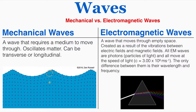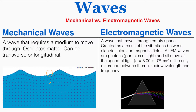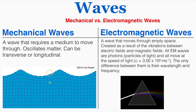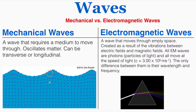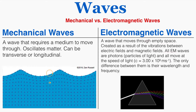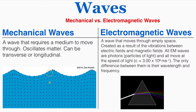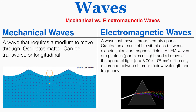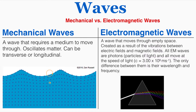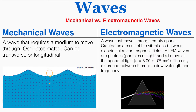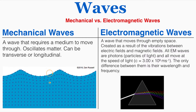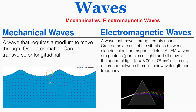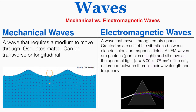Another difference to note is the difference between mechanical waves and electromagnetic waves. A mechanical wave is a wave that requires a medium to move through — some substance to move through — it oscillates matter, and it can be transverse or longitudinal. For example, an ocean wave requires the ocean in order to exist. If there wasn't water we wouldn't be able to describe ocean waves at all. If there's no medium, the wave itself does not exist.